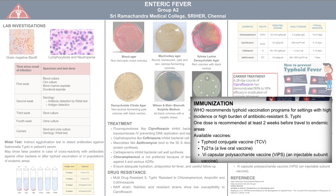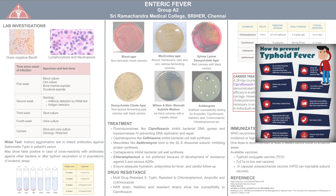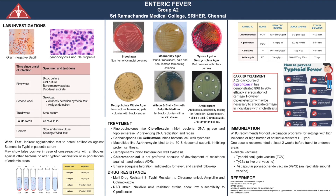WHO recommends a typhoid vaccine program to reduce the incidence of Salmonella typhi and its antibiotic-resistant strains. One dose is recommended at least two weeks before travel to endemic areas. Available vaccines are the typhoid conjugate vaccine, TY21A — a live oral vaccine — and Vi capsular polysaccharide vaccine. Prevention is better than cure: go to the hospital if you have fever, diarrhea, vomiting and stomach ache. Drink and eat well-cooked water and food. Follow hand hygiene and use clean cutlery.